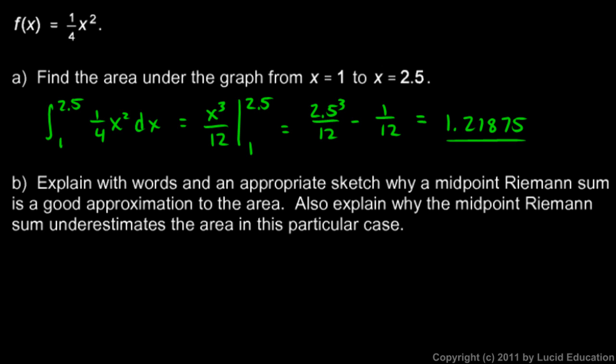Now in part b, it says, explain with words and an appropriate sketch why a midpoint Riemann sum is a good approximation to the area. And then we're also told to explain why the midpoint Riemann sum underestimates the area in this particular case. Two things about this. We're told to explain with words, and that's important.